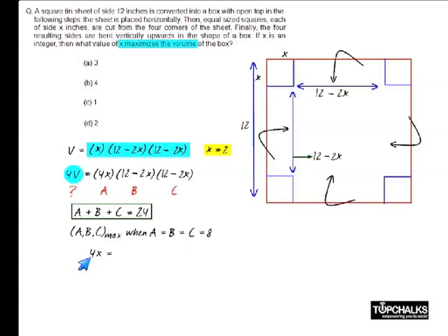So you will find that 4x equals 8, 12 minus 2x equals 8, 12 minus 2x equals 8, where they are a, b and c. This implies x must be equal to 2.